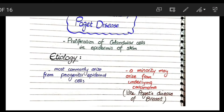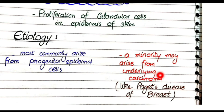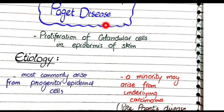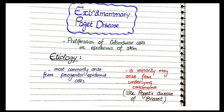An important distinction: in Paget's disease of the vulva, only a minority of cases represent an underlying carcinoma. In most cases, it is caused by abnormal differentiation of progenitor epidermal cells. So, Paget's disease of the breast always represents an underlying carcinoma, while extramammary Paget's disease of the vulva mostly does not.